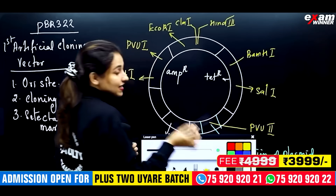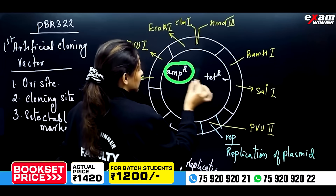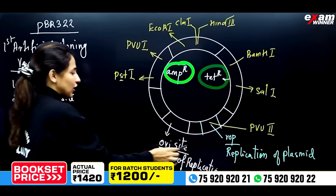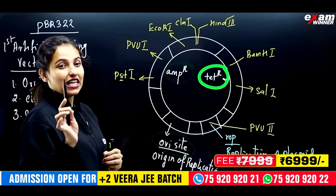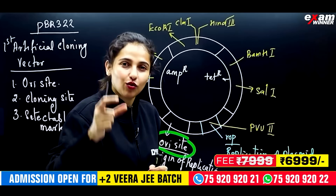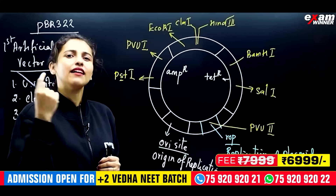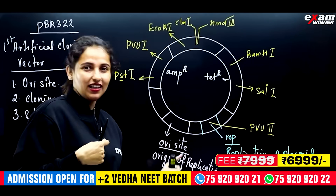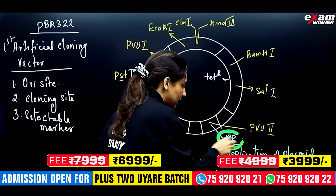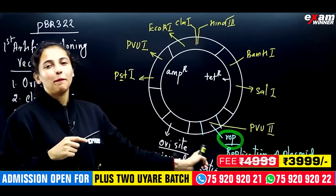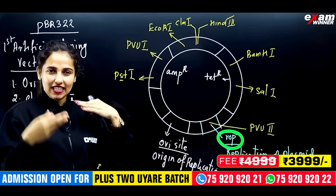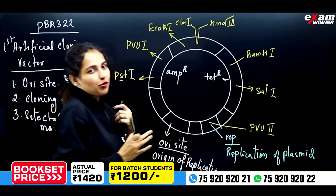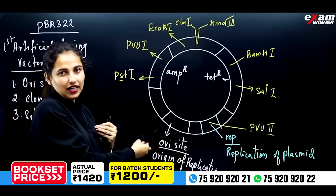There is a list of selectable markers — ampicillin and tetracycline resistance. The ori site is a sequence where replication originates, and it controls copy number. ROP stands for replication of plasmid — it controls high replication.